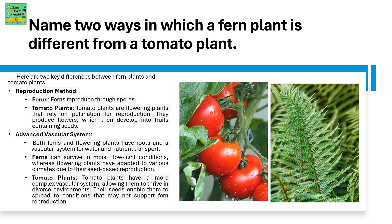Name two ways in which a fern plant is different from a tomato plant. Firstly, it's the reproduction method. Ferns reproduce through spores, whereas tomato plants rely on pollination for reproduction. They produce flowers which then develop into fruits containing seeds.